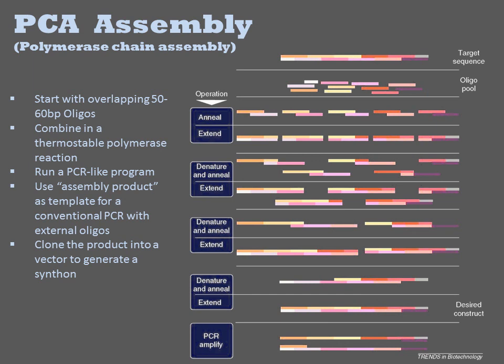Regardless of whether the double-stranded DNA is assembled using LCA, PCA, or a mixture of the two, the full-length product is typically cloned into a vector, introduced into cells, and individual clones are sequence confirmed.